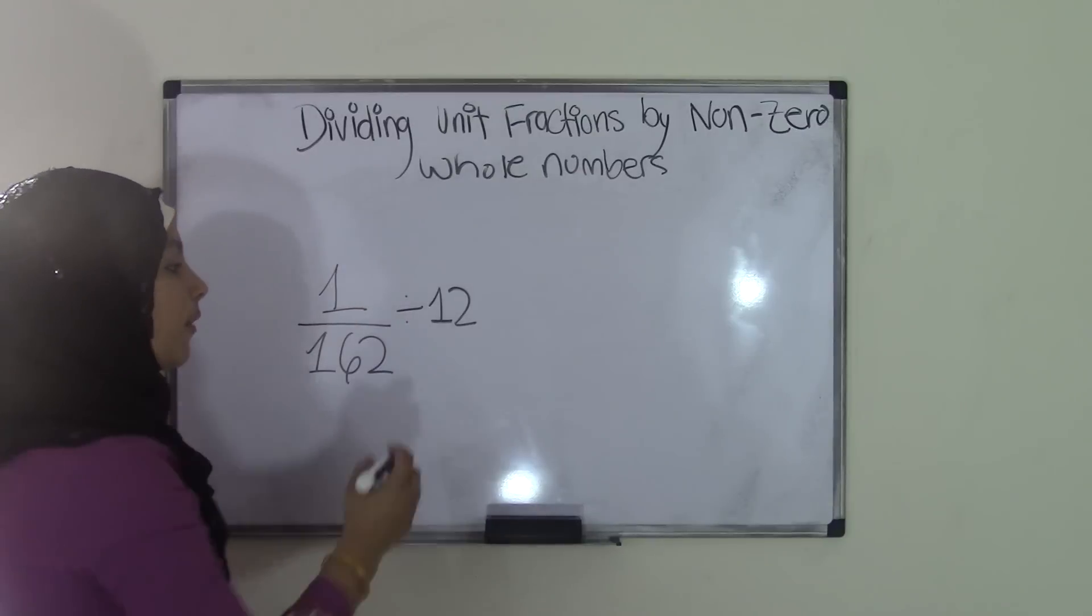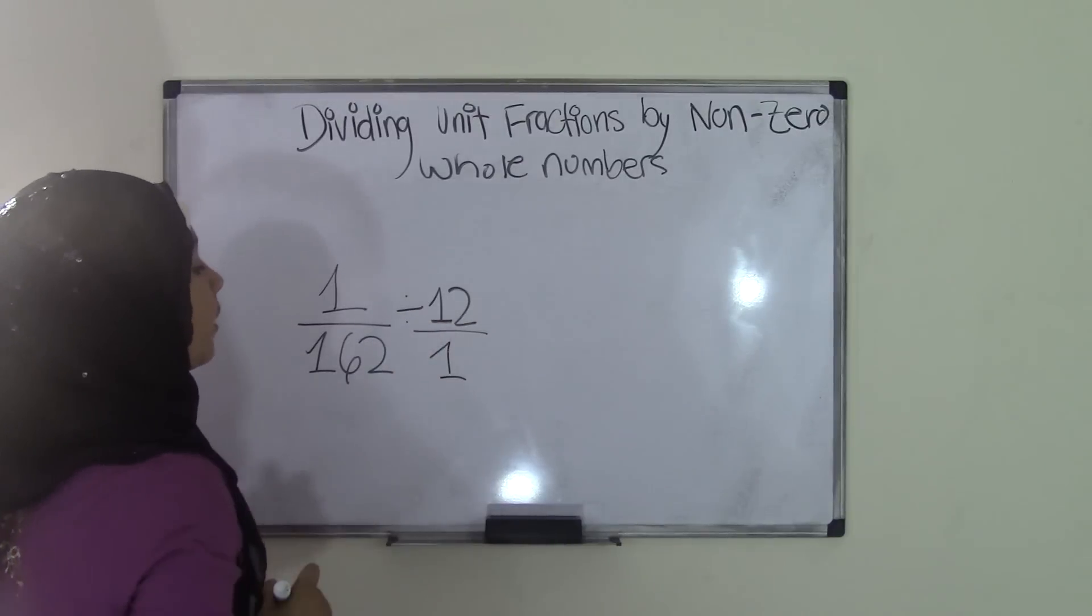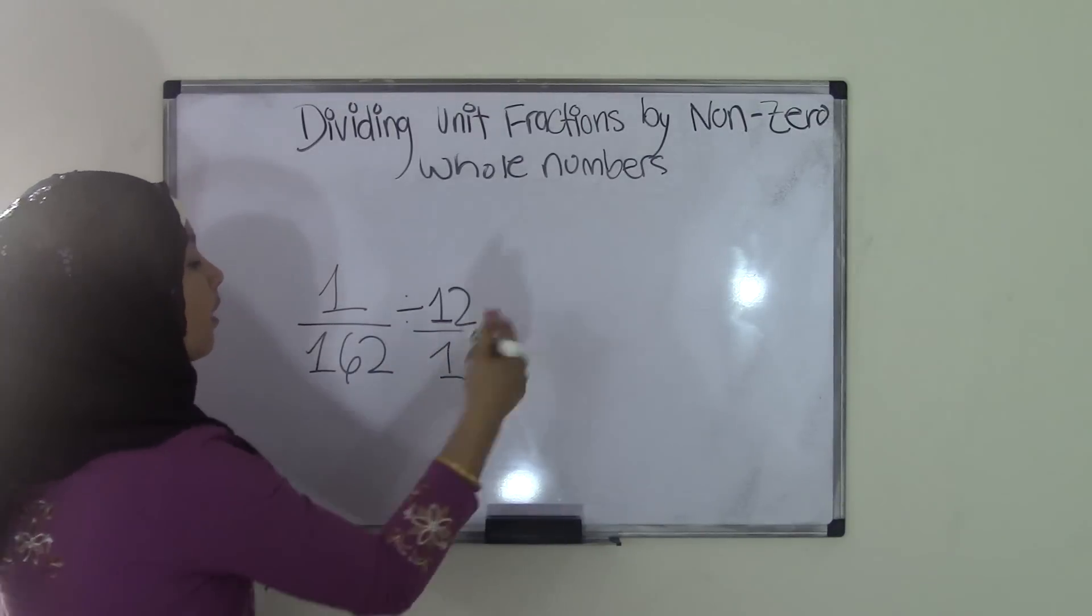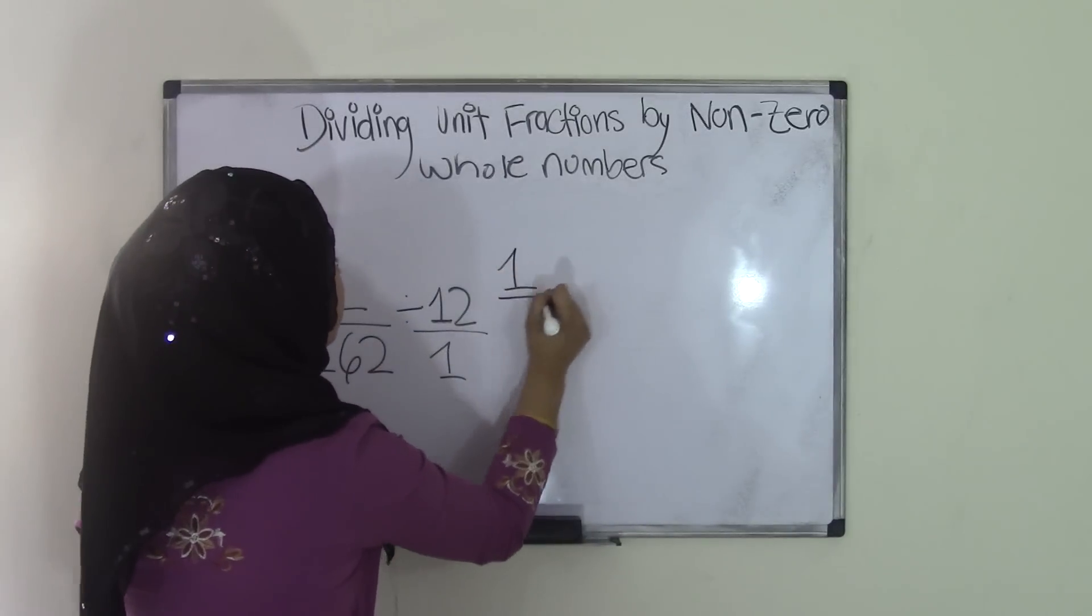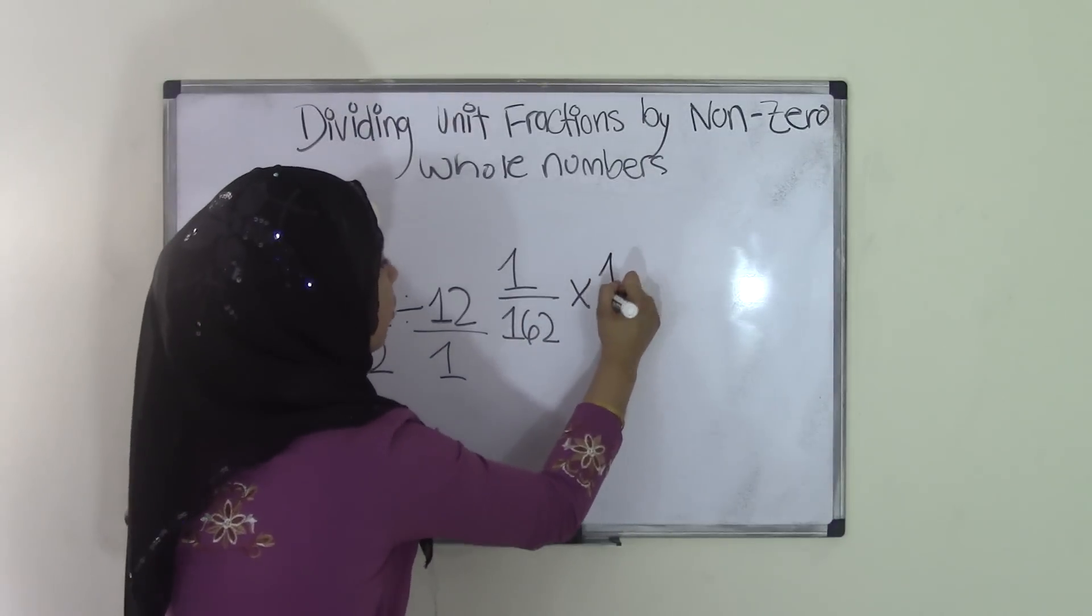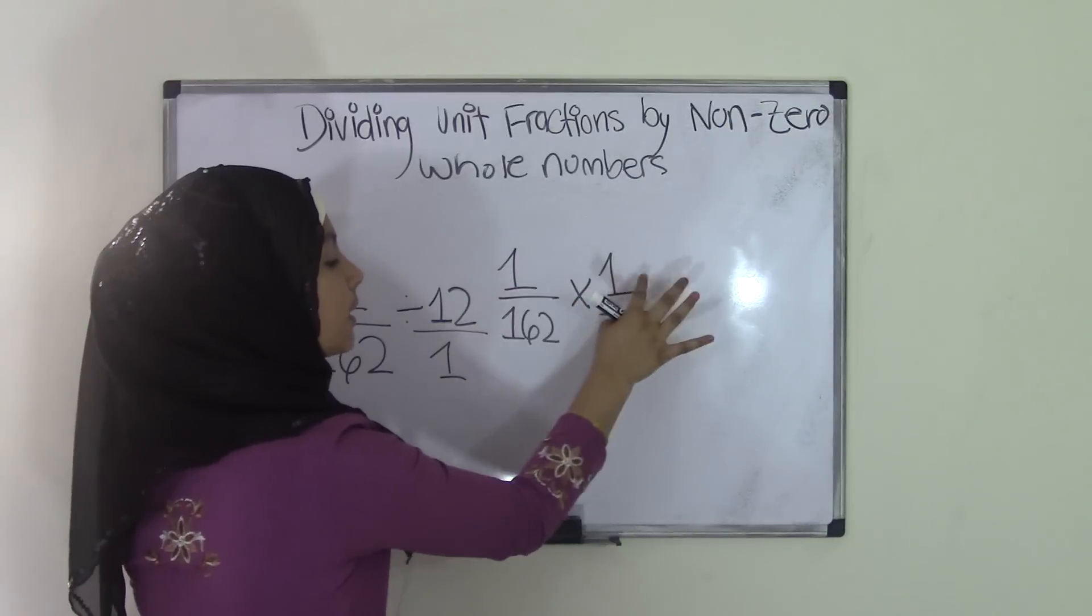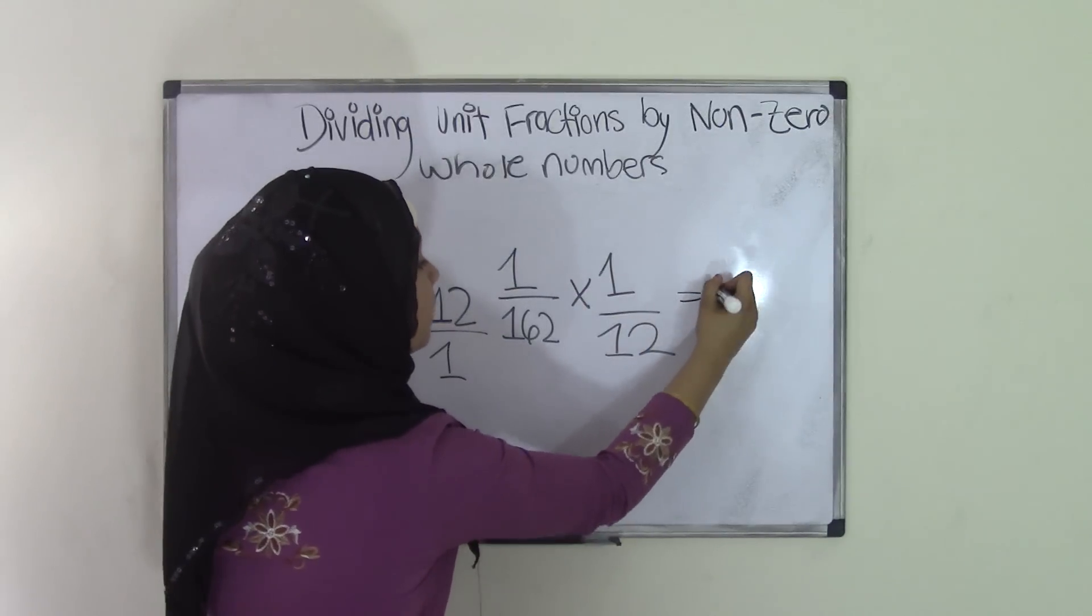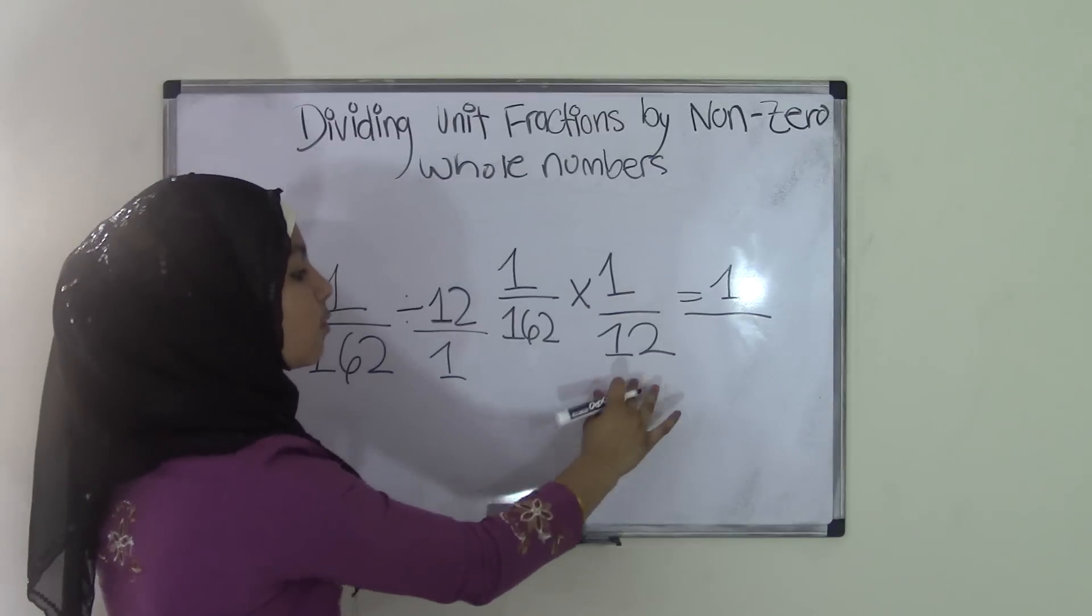So again, reciprocal method, but for reciprocal method, we have to add our 1 for the denominator. So now this becomes, in reciprocal terms, it would be 1 over 162 times 1 over 12. And we know that 1 times 1 is, of course, 1.